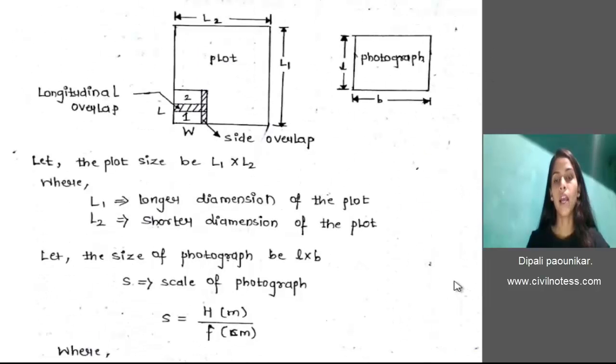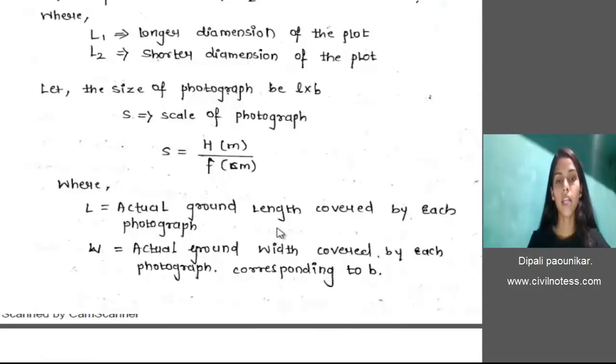And W, capital W, is the actual ground width covered by each photograph corresponding to B.